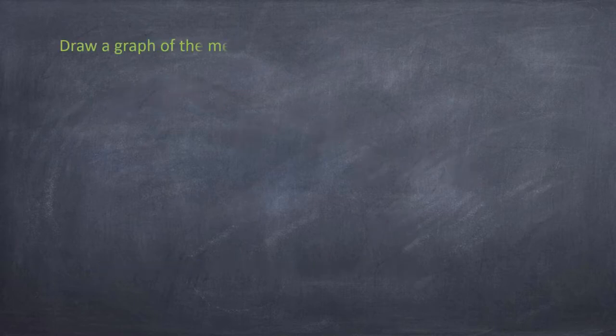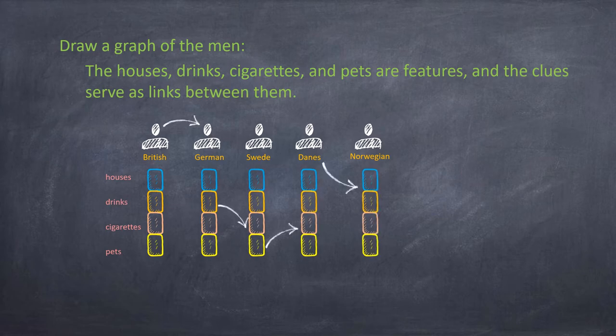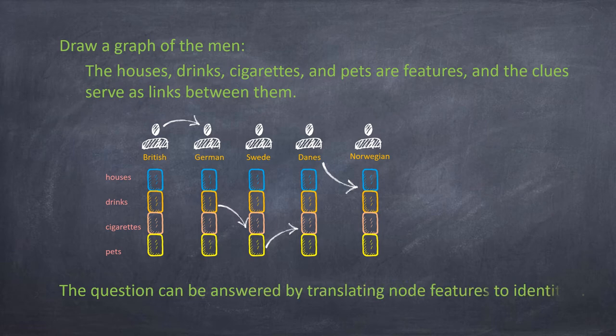To answer this question, we can first draw a graph of the men. Everyone has some features, and the clues serve as links between them. By logical reasoning, node features can be translated into node identities, and the question can be answered.